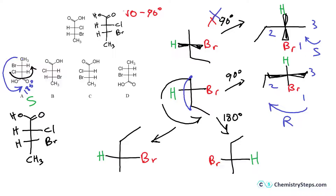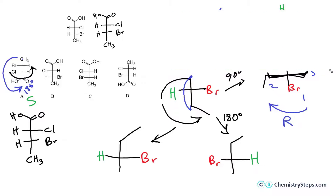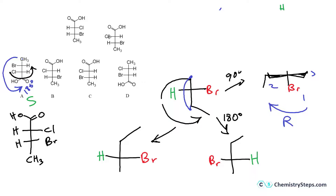Moving to the next option: the carboxylic group is on top, which is correct. With the vertical groups in place, we see that this carbon's configuration is inverted — mirror reflected — while this other stereocenter has stayed the same. Therefore this structure represents a diastereomer of the compound of interest, so that's option D.